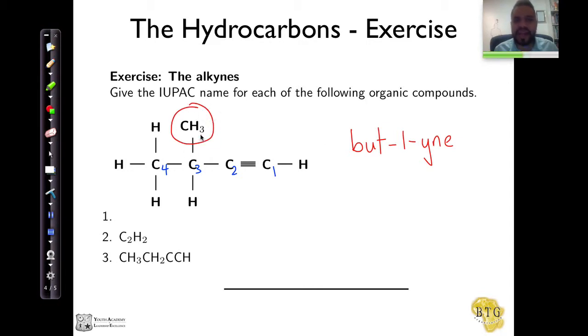But I haven't particularly addressed this thing over here. Now when I have what we call a side chain or a branch, that is a branch. And that branch contains one carbon with three hydrogens, we say that is a methyl branch.